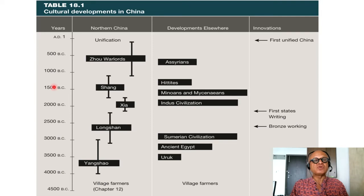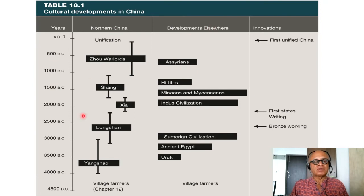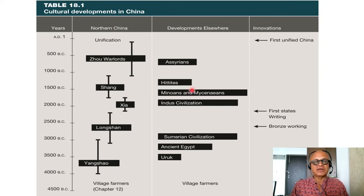Coming to its favorite graphic rendition of timetables, these are cultural developments in northern China and developments happening elsewhere around the same time, and the innovations that occurred as a whole human civilization.